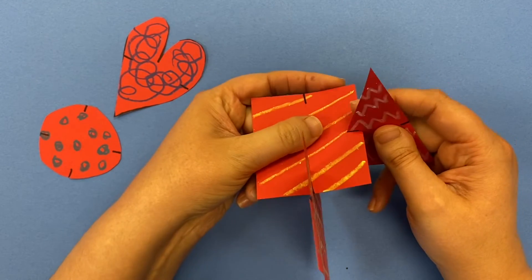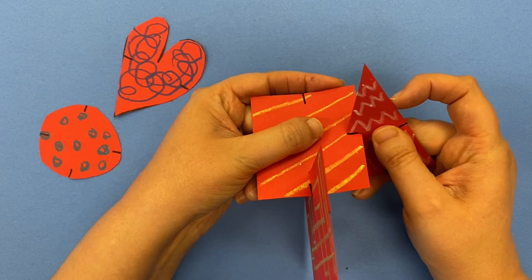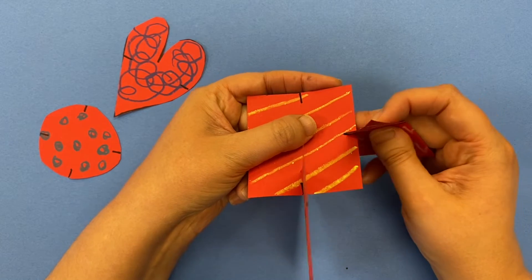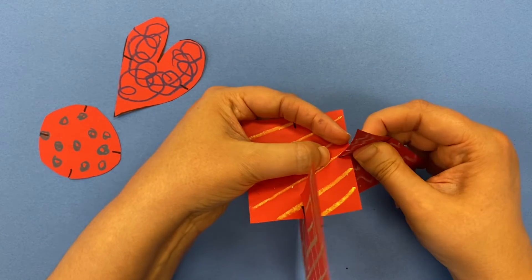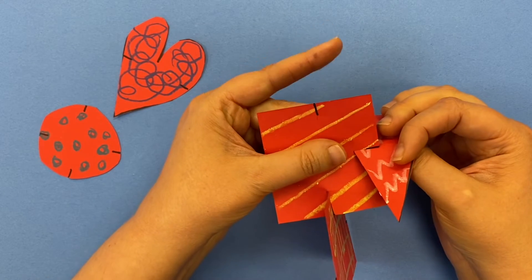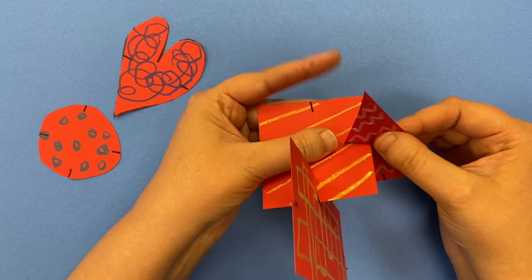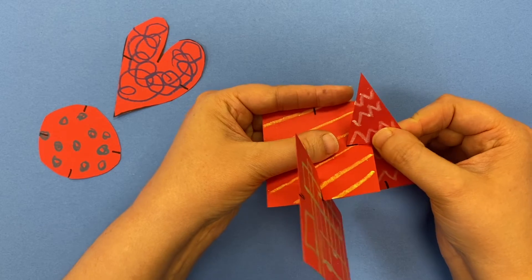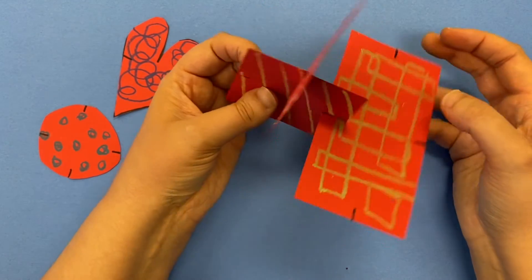If the lines are just overlapping a little bit like that, it's not going to be very strong. But if you open them both up, then you can lock them in.